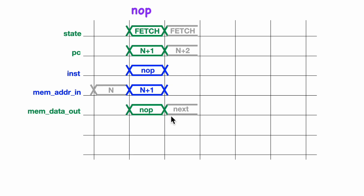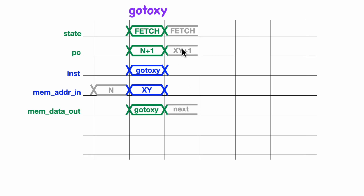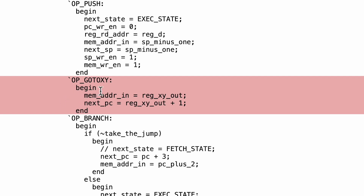Now let's take a look at the indirect jump instruction. It's very similar. It takes the value that's in the XY register and jumps to that location. So it will send the value of the XY register to the memory unit, and on the next cycle the target instruction will be fetched. It also loads the program counter with the value of XY plus 1. This is the address of the byte that follows the opcode byte of the target instruction. So now let's take a look at what the indirect jump looks like in Verilog.